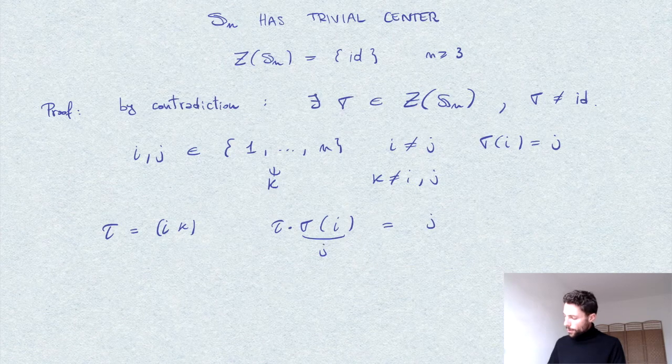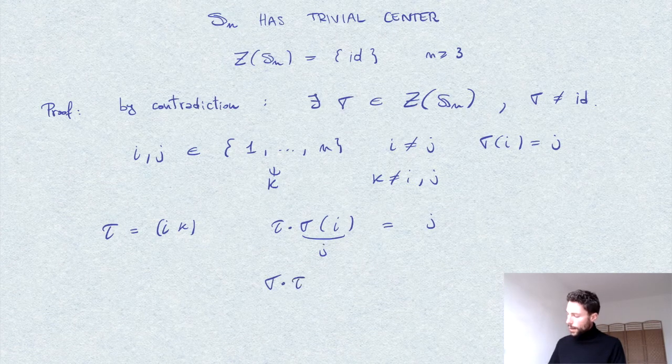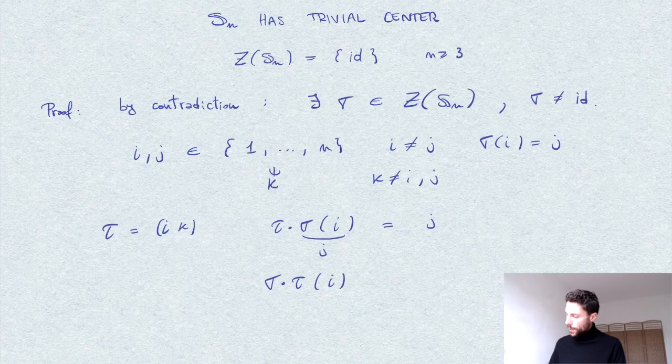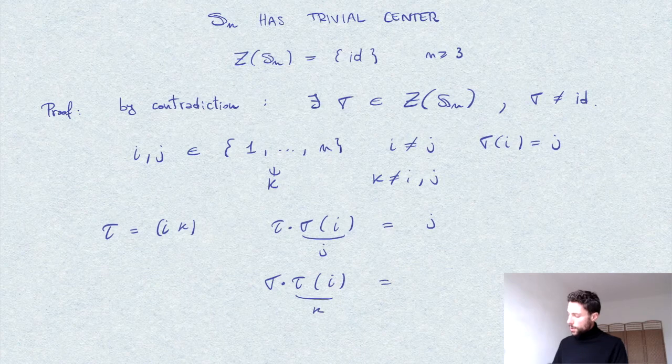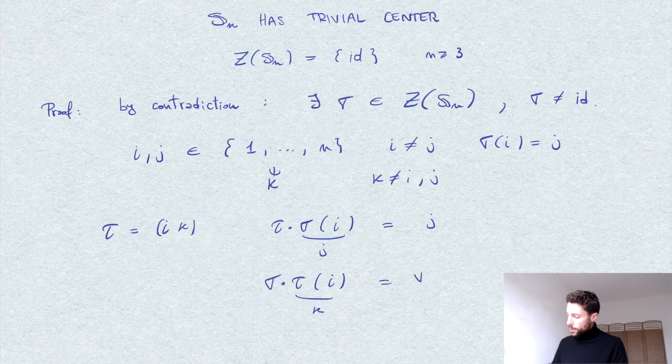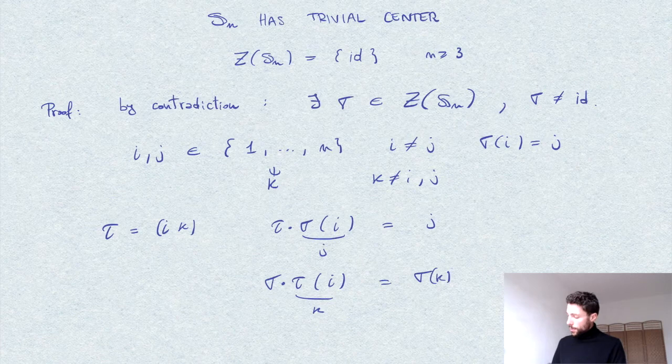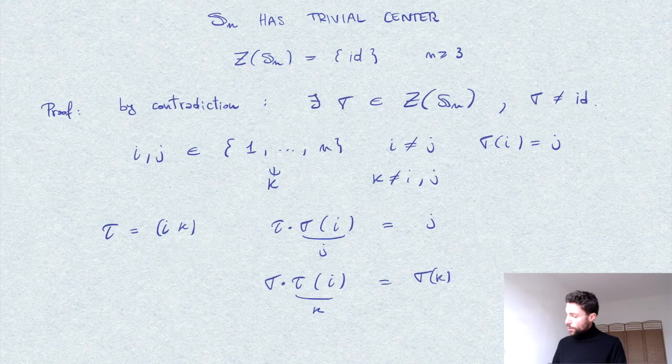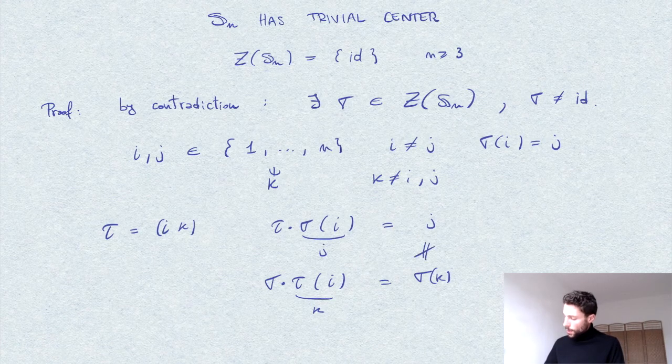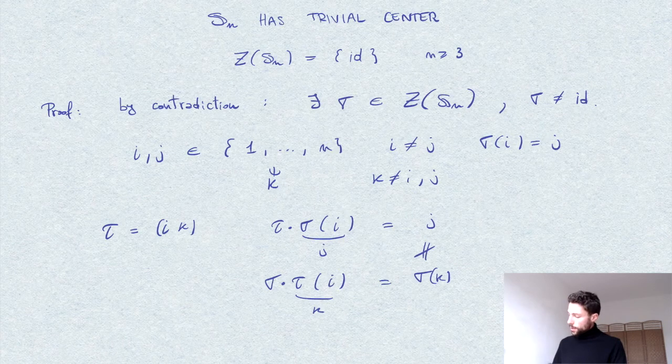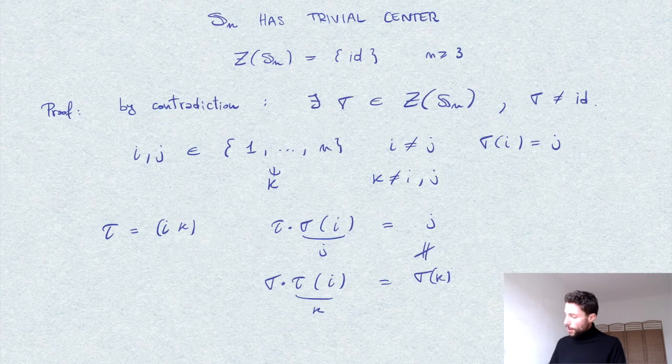On the other hand, if we compose sigma with tau and we apply to i, then tau of i is equal to k, so this is whatever sigma of k is. But of course, this cannot be equal to j since sigma of i is equal to j and sigma is a one-to-one mapping of the numbers between 1 and n into itself.